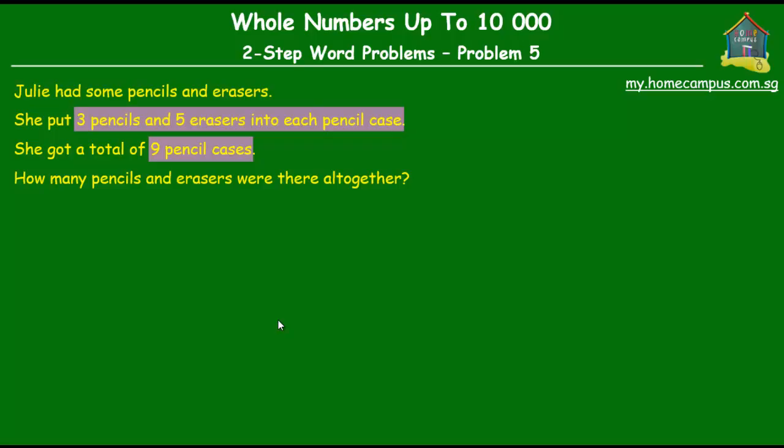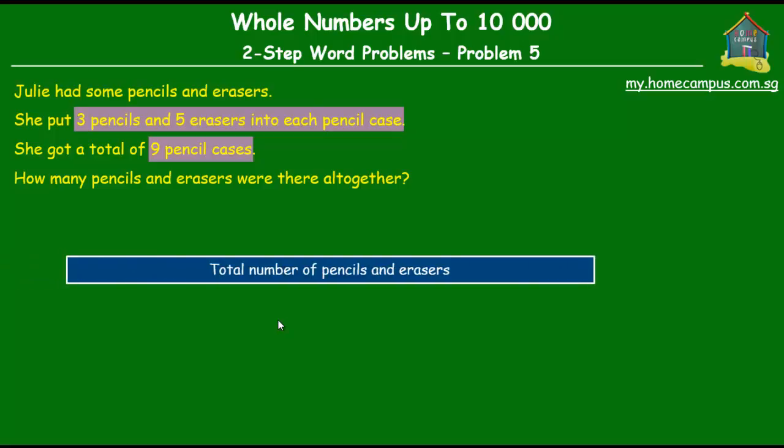Let's start by making a model diagram. So Julie had some pencils and erasers, and this big unit over here tells us the total number of pencils and erasers that Julie had. And actually, that's what we have to find out - how many pencils and erasers there were all together. So that's the big question.